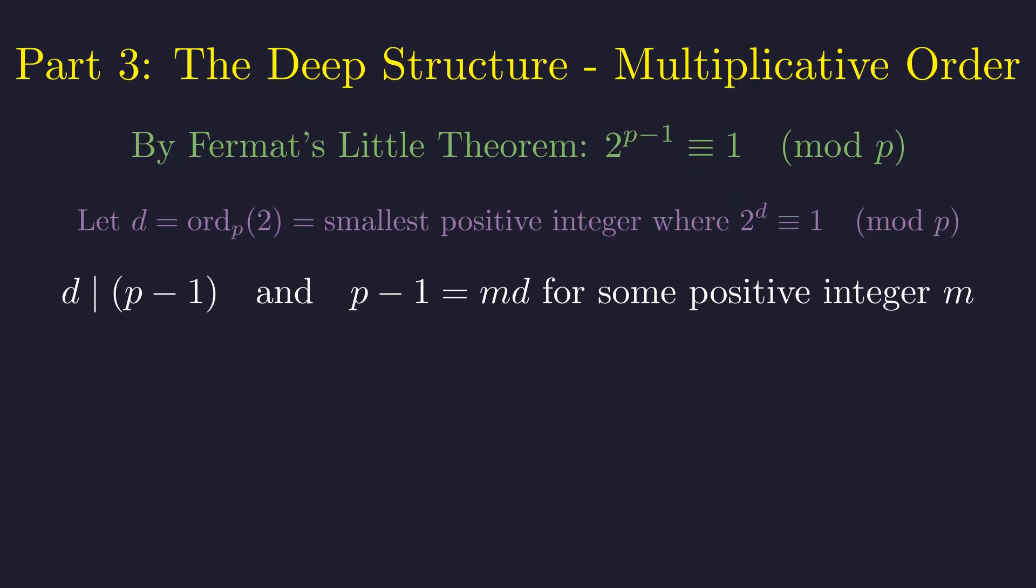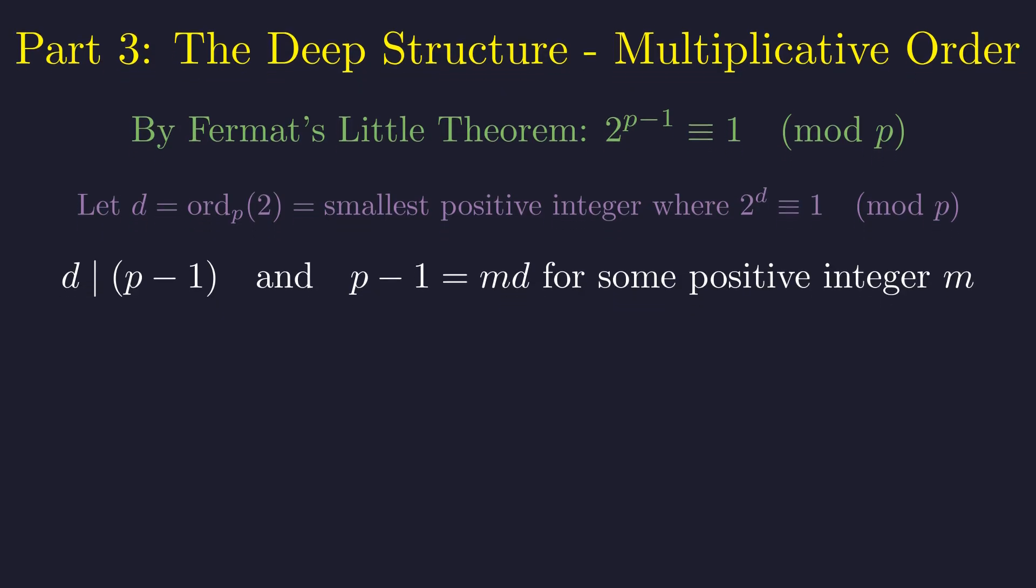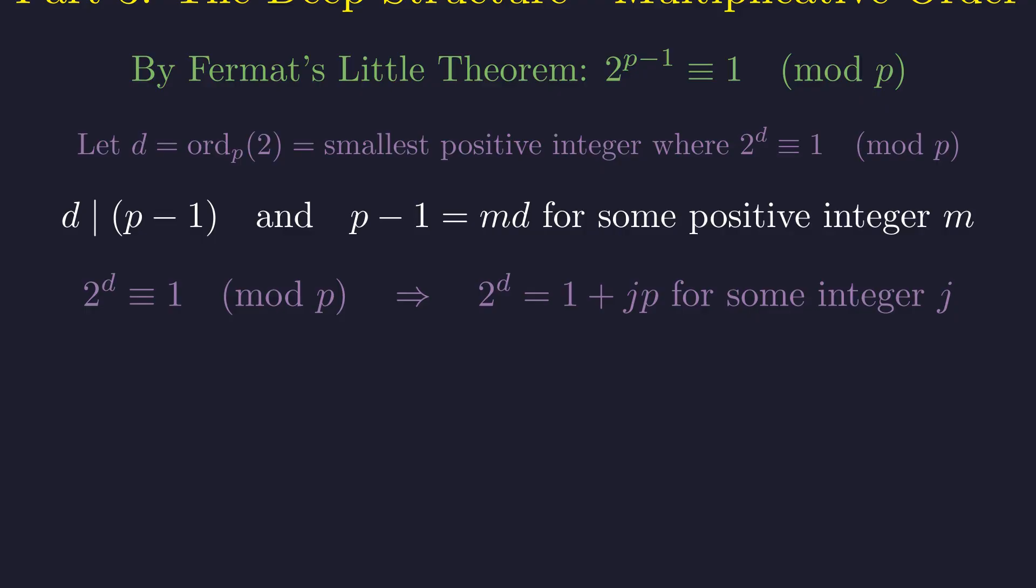Therefore, d divides p minus 1, and we can write p minus 1 as m times d for some positive integer m. From the definition of order, 2 to the d minus 1 is divisible by p. In equation form, 2 to the d equals 1 plus j times p for some integer j.